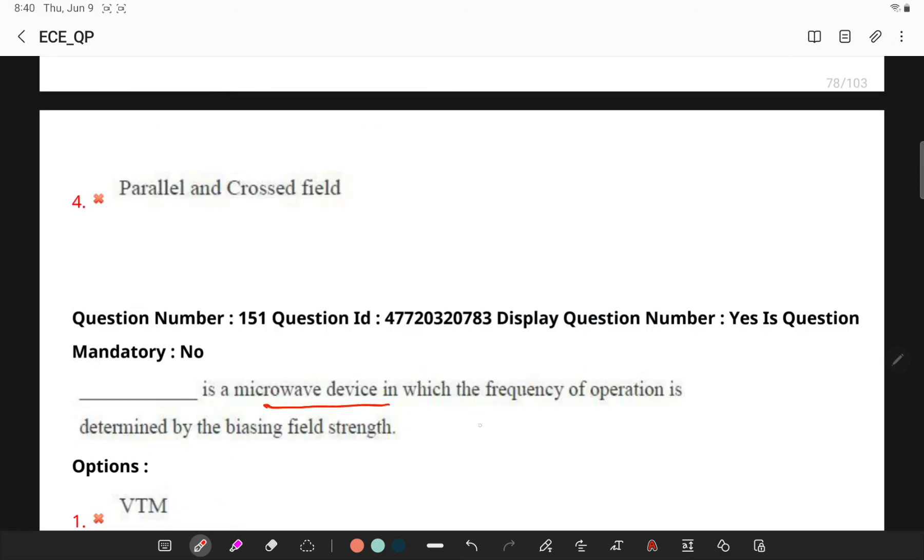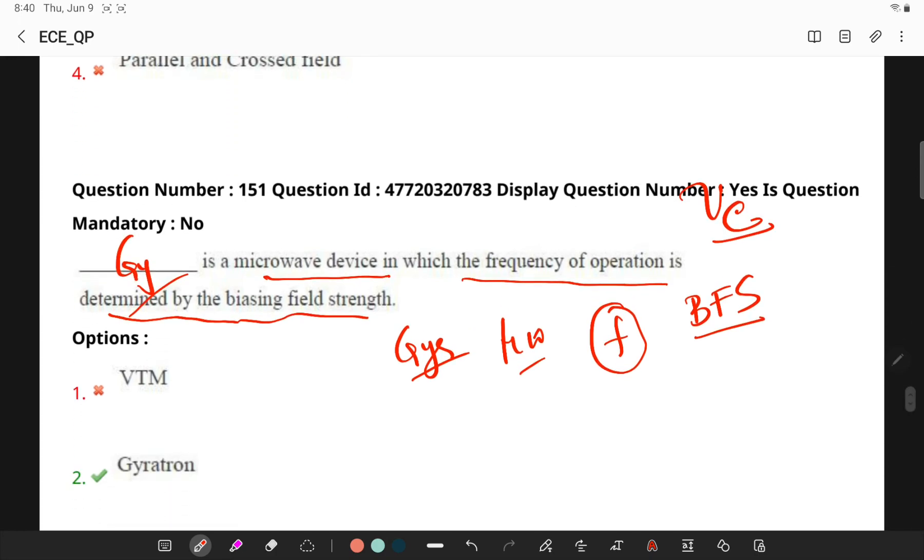Which is a microwave device in which the frequency of operation is determined by the biasing field strength. Klystron is a microwave device in which frequency of operation is determined by the biasing field strength and electron velocity, which is as opposed to the dimensions of the tube itself. This makes gyrotron special and useful for microwave frequencies.